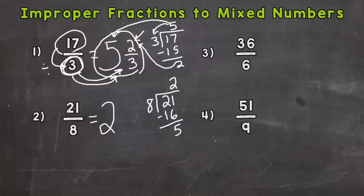So remember, the remainder is our numerator portion of the fraction. And then we keep the denominator the same. So 2 and 5 eighths.